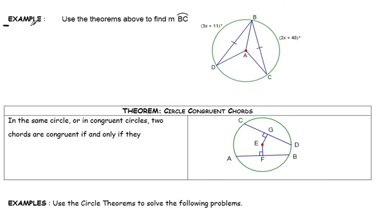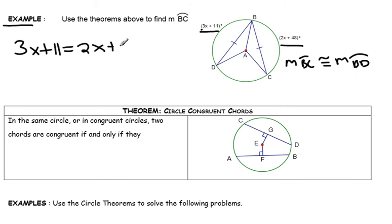So for the first example, the theorem above says that if the two chords in a circle are congruent, then the two arcs, arc BC, would be congruent to arc BD. So the two chords that form the two congruent arcs would be congruent. So we would just set 3X plus 11 equal to 2X plus 48.